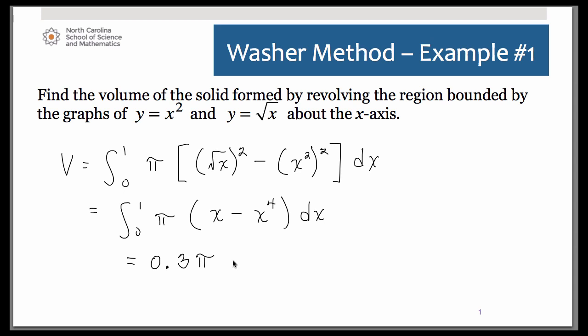If you multiply the pi in to get a decimal answer, a pure decimal answer, you would get approximately 0.942.